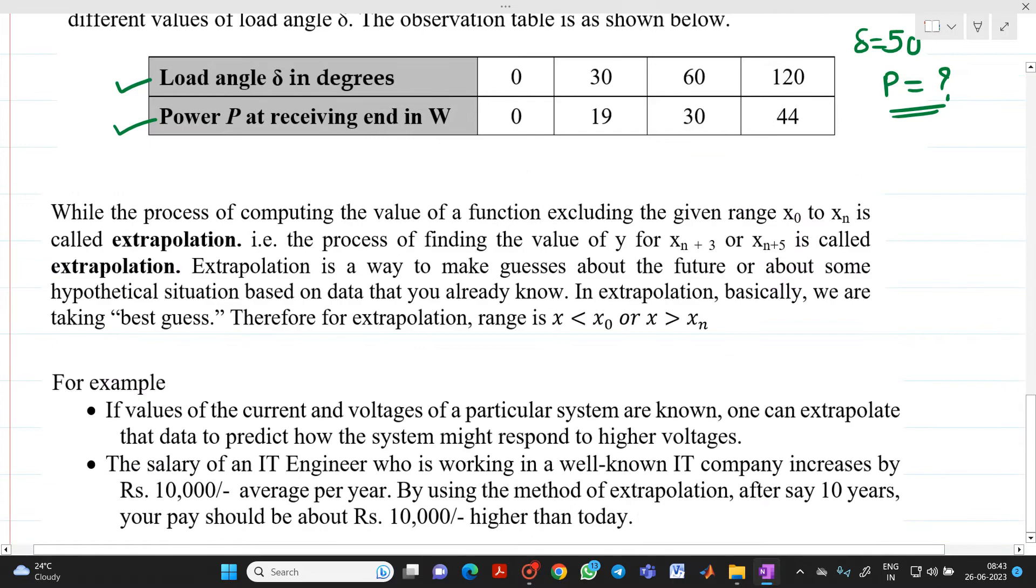Now, there is another process which is called as extrapolation also. Suppose, here if you see, the x0 is 0, xn is 120. Now suppose, now it is not possible in practical, but suppose if delta equal to 150 degree I have taken, then what could be the power P? If you see, if you observe, this 150 degree is out of the scope of values of x. So, the process of computing value of a function which excludes x0 to xn, this is called as extrapolation.